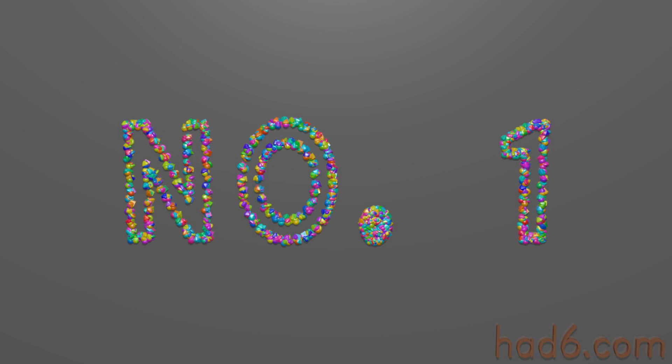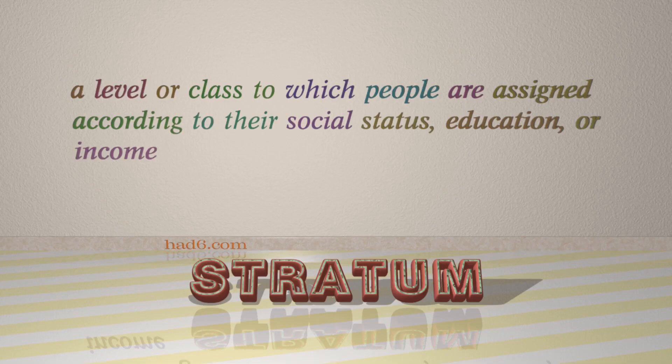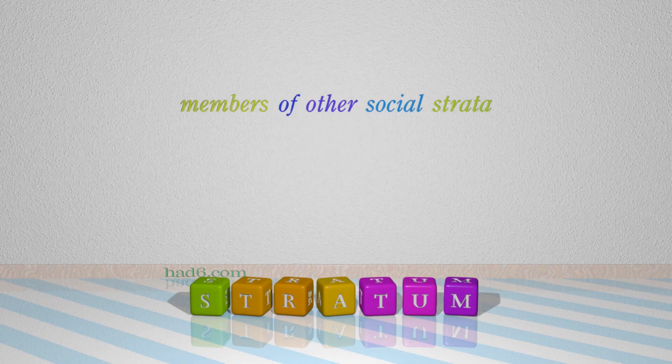Number 1: Stratum — which means a level or class to which people are assigned according to their social status, education, or income. For example: Members of other social strata.